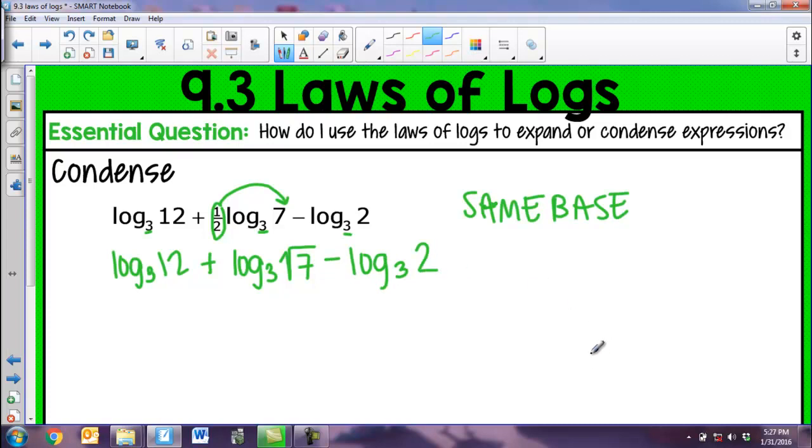And now I'm just going to go left to right and simplify down what I can. So if I have a plus on the outside, I know that I'm actually multiplying on the inside of my log. So since these are the same base, I would take log base 3 of 12 times the square root of 7. And then I still have minus log base 3 of 2.